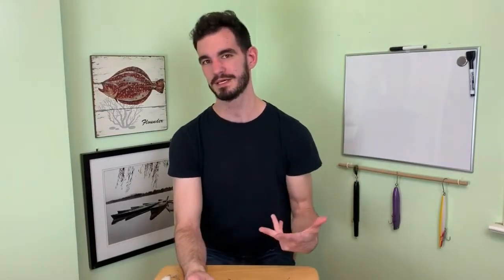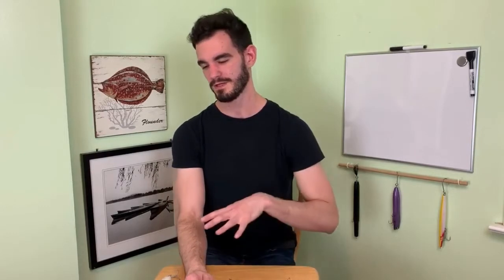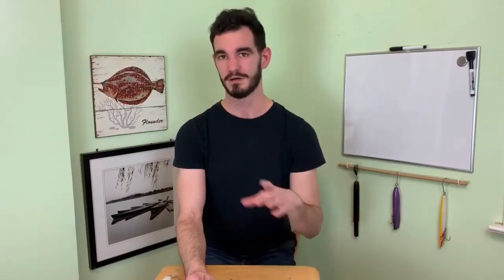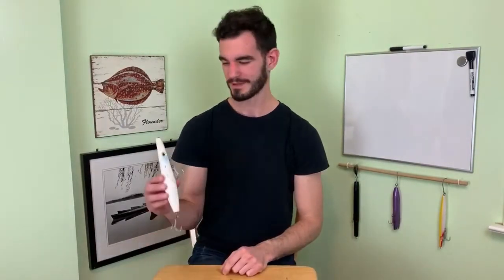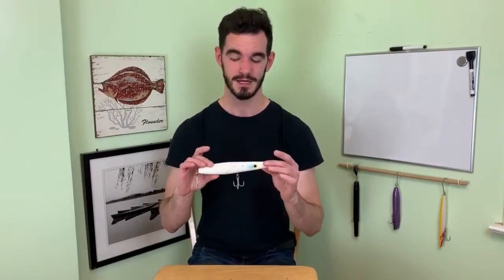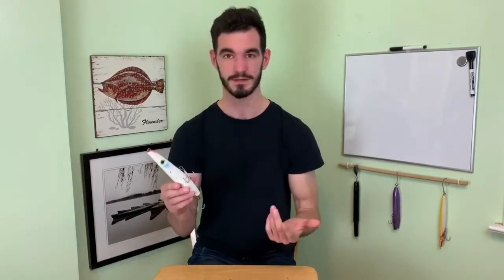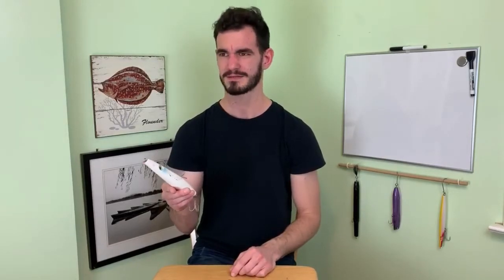The first lure we're going to cover is the pencil popper. There's three brands I like to carry. I carry them in three relative different sizes, small, medium, large. So the first one I have here is the Guppy Senior. This is one of the larger pencils available. I think it's north of three ounces, something like nine inches.